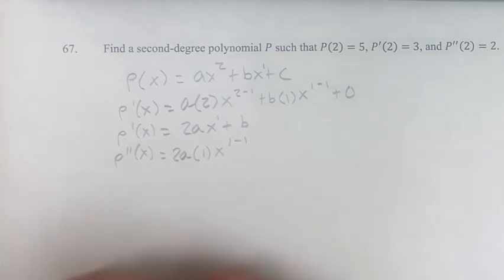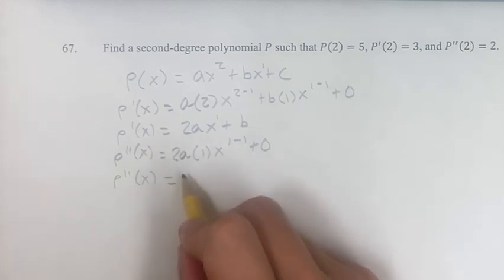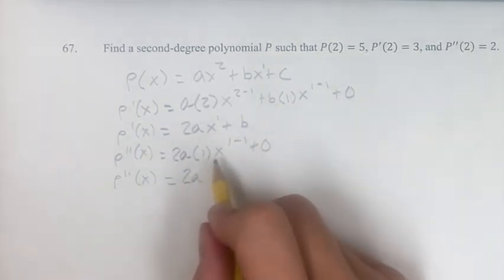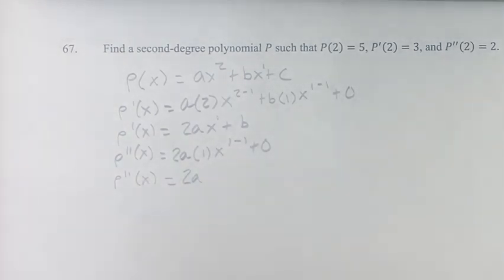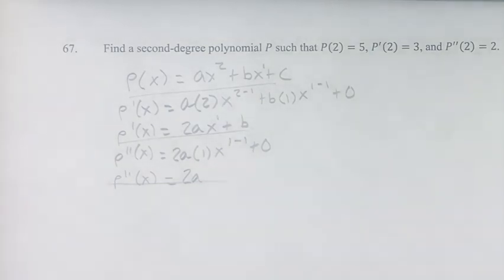And again, the derivative of a constant is 0, so plus 0. So the second derivative is equal to 2A times 1 is 2A, times X to the 1 minus 1 is 1, just like with there. So that just cancels out, and we just have 2A. So this is our P, this is the derivative of P, this is the second derivative of P.